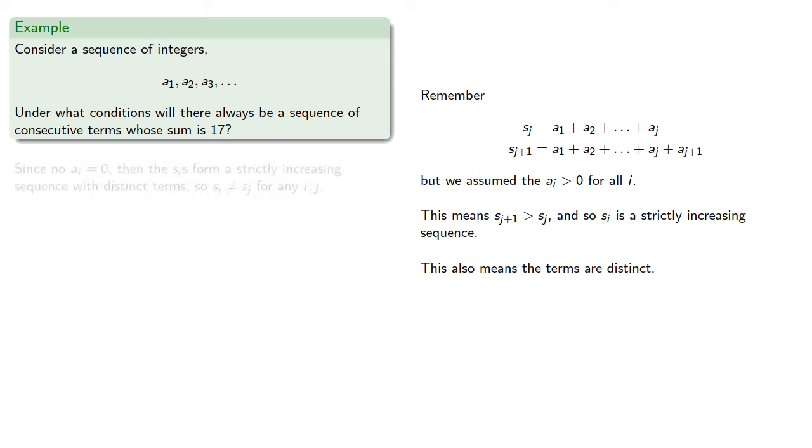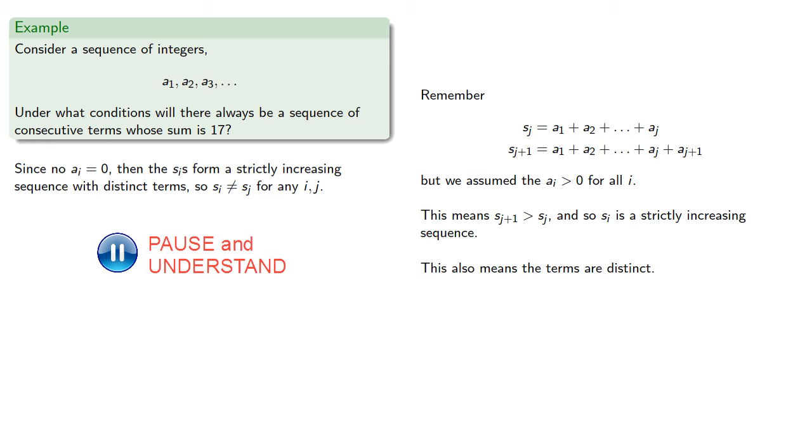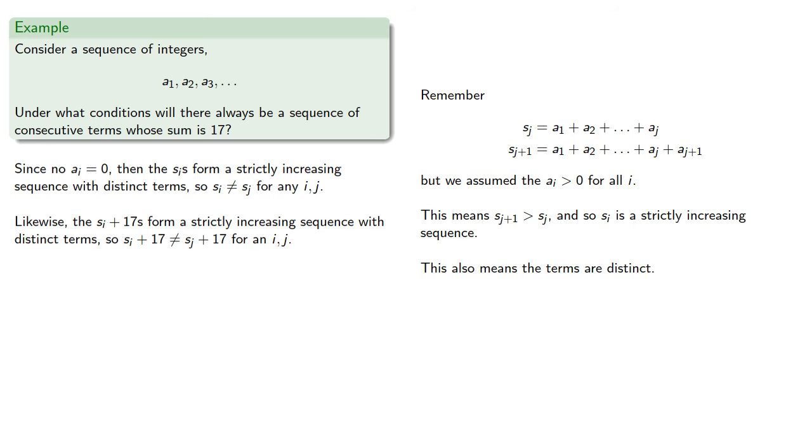So, we might note the following: since no ai is 0, then the si's form strictly increasing sequence with distinct terms, so si is not equal to sj for any i or j. And likewise, the si plus 17's form a strictly increasing sequence with distinct terms, so si plus 17 is not equal to sj plus 17 for any i or j.